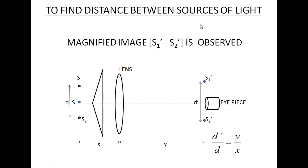The next question is how to find the distance between the two sources of light, that is small d. This cannot be directly measured. What we do is place a small focal length convex lens in front of the prism in such a way that the images of S1 and S2 are viewed through the eyepiece. The distance between S1' and S2' is larger than the distance between sources S1 and S2 — that is, a magnified image of the sources is obtained. When this image S1' and S2' is clearly visible, we can write that d' / d = y / x.